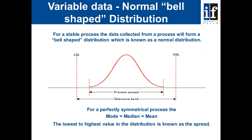When we consider a normal distribution — this is variable data — most processes return a normal distribution curve. We can see the process spread, which is the extent of the upper and lower edge of the distribution curve, and the tolerance band, which is the distance between the lower specification limit and the upper specification limit. Ideally we would like the process spread to fall within the control limits and to be shorter. For a perfectly symmetrical process, the process mode, median and mean will be the same value.